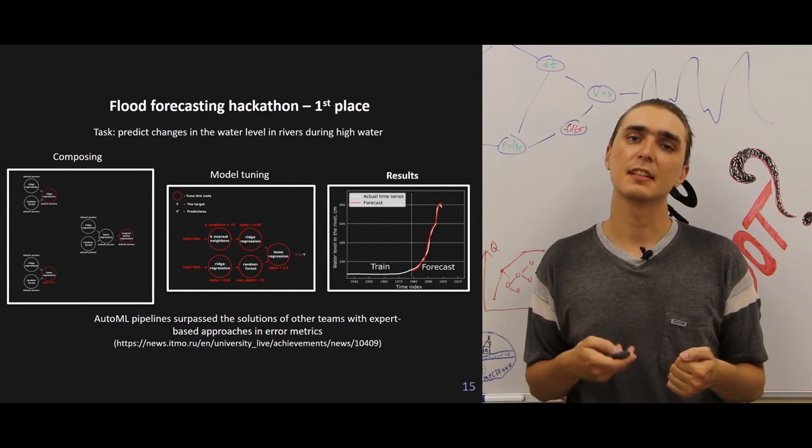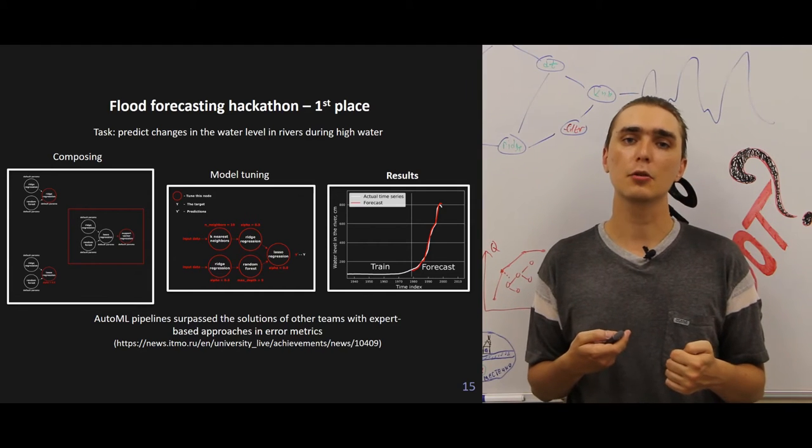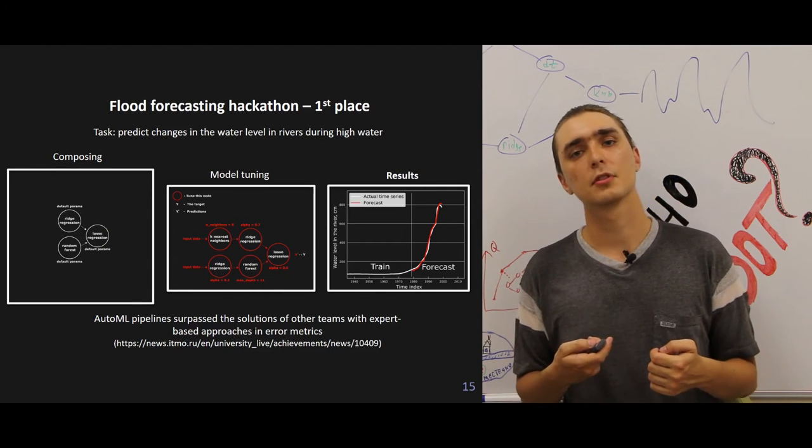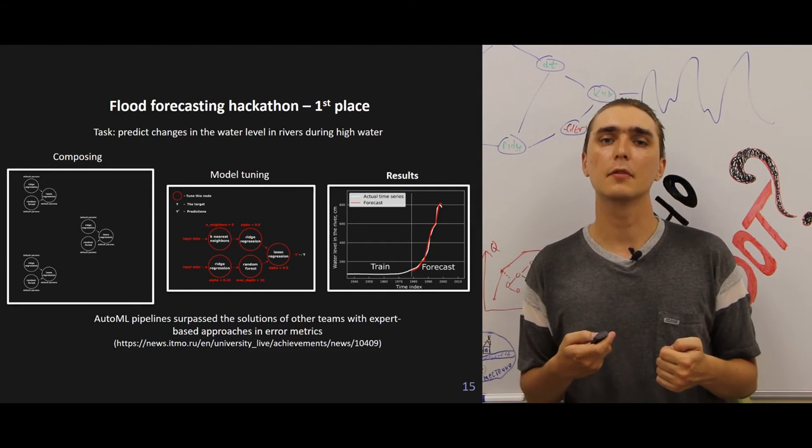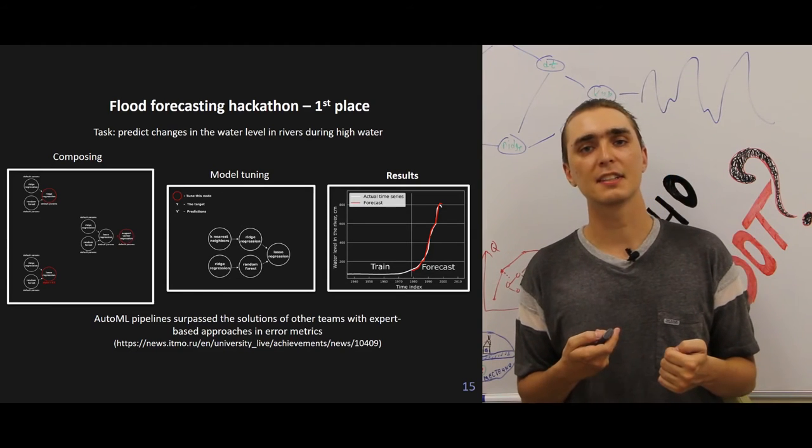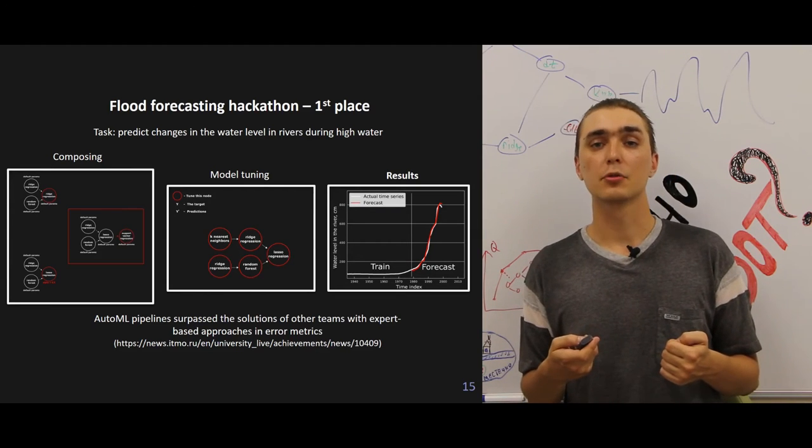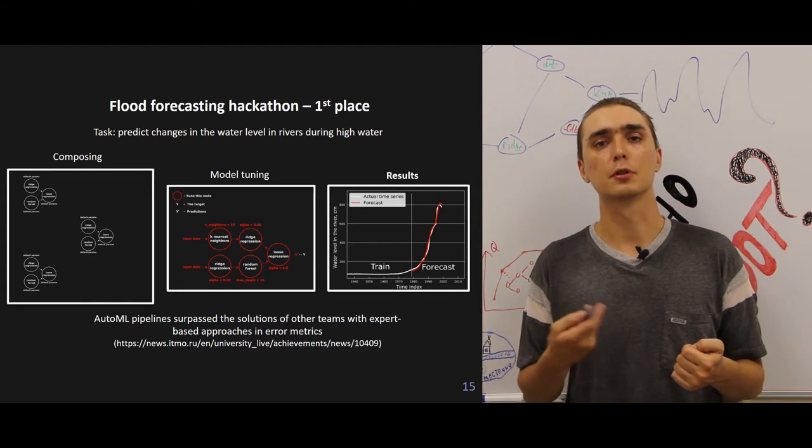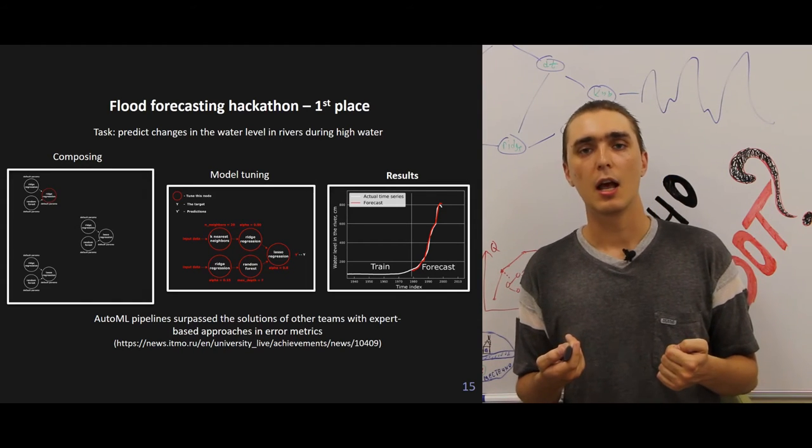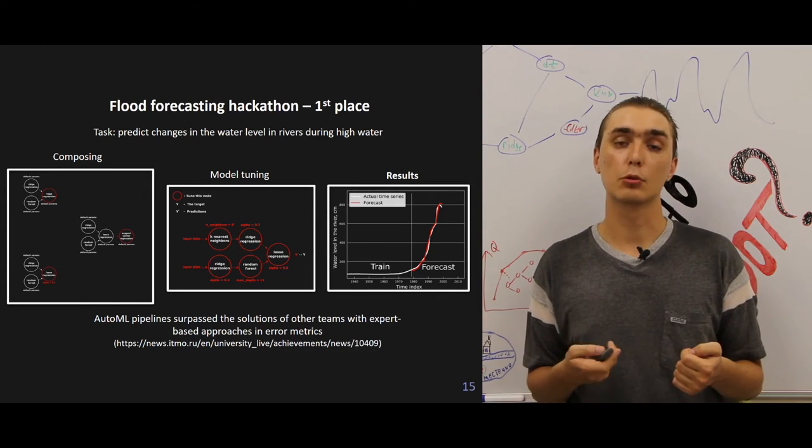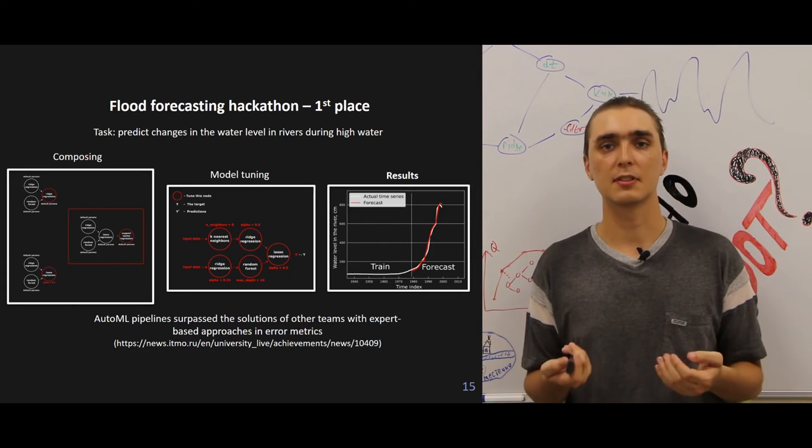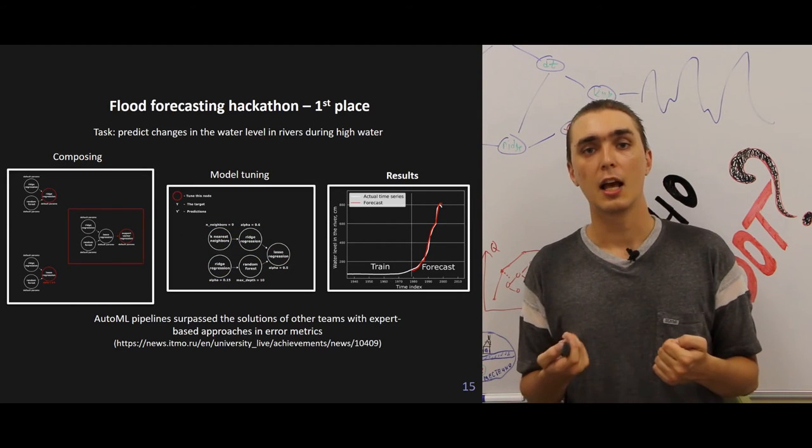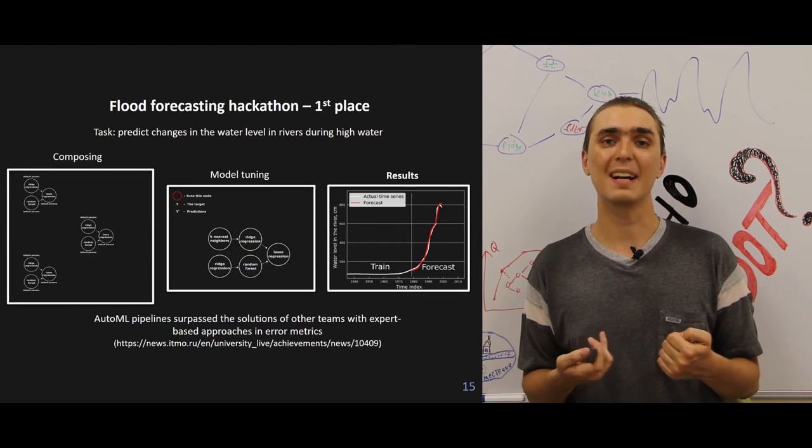The second case is the flood forecasting hackathon. It was aimed to predict the river floods for Lena River located in Siberia, and we produced a pipeline that allows us to achieve first place in this competition. We presented the solution to the hydrologists, and they were very impressed, since the solution really overcame all existing solutions for this case.